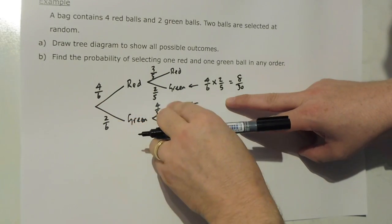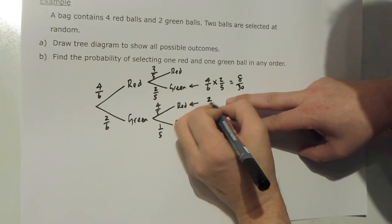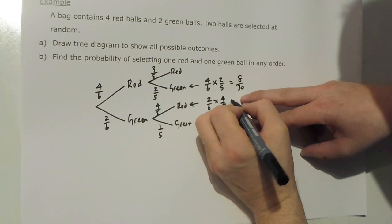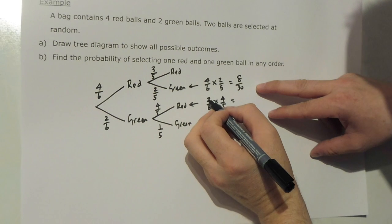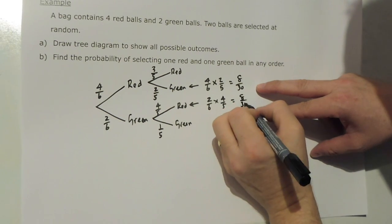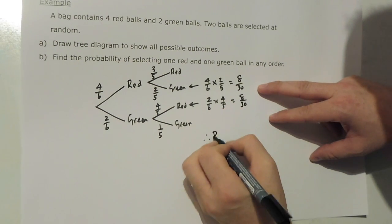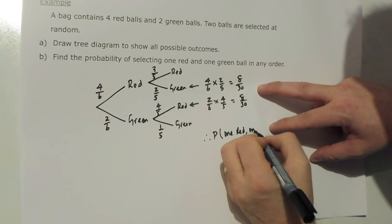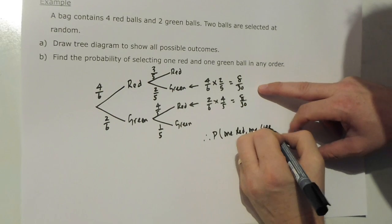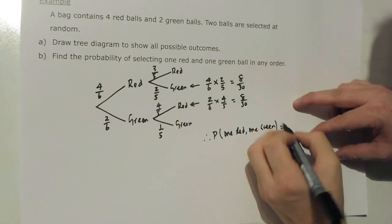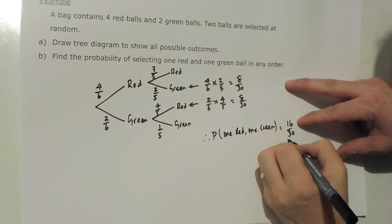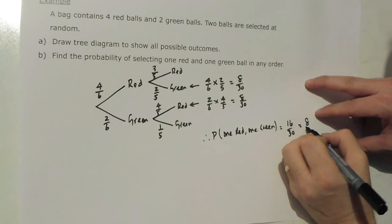The probability of green and red, green is 2 out of 6 and red is 4 out of 5, and that gives me an answer of 8 out of 30. Therefore, the probability of 1 red, 1 green in any order is 8 out of 30 plus another 8 out of 30, so 16 out of 30.